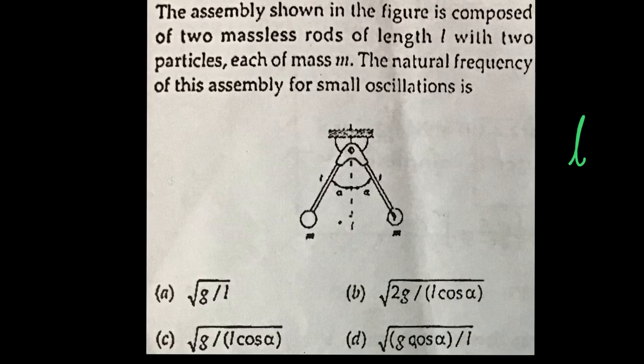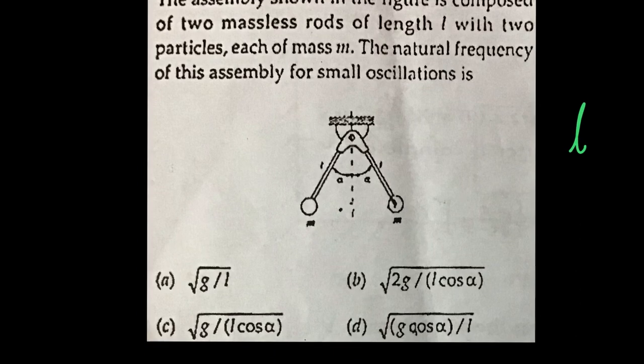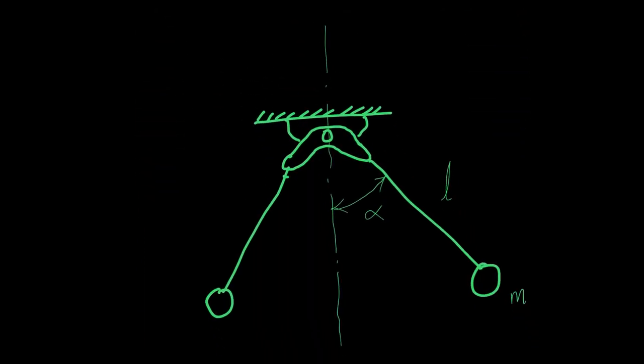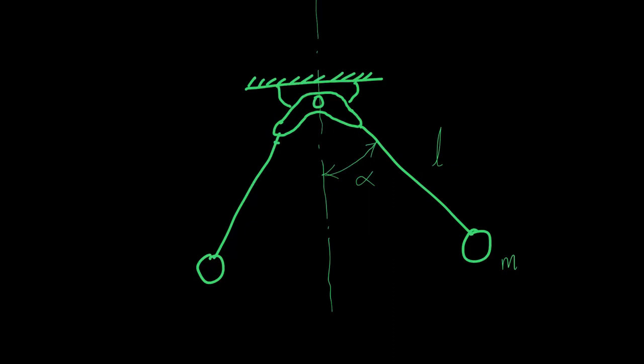So the first thing we need to do or the first thing we need to ask ourselves is that let's say I am slightly disturbing the system and then what is the probable way this system is going to move. So that's the first question we need to ask. And the second question is that once I set the system into disturbance or once I disturb the system then can I write the equation of motion that governs the system.